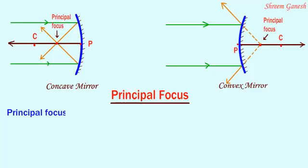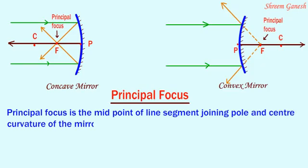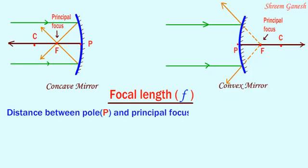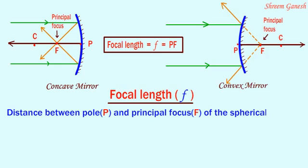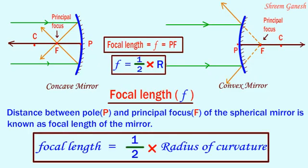The principal focus is the midpoint of the line segment joining the pole and center of curvature of the mirror. The distance between the pole and principal focus of the spherical mirror is known as the focal length of the mirror. Numerically, focal length is half of the radius of curvature.